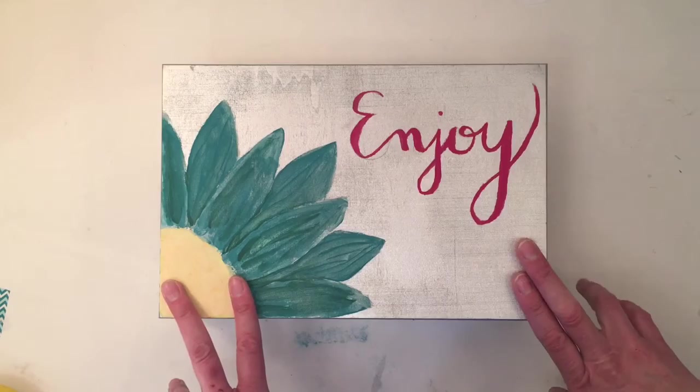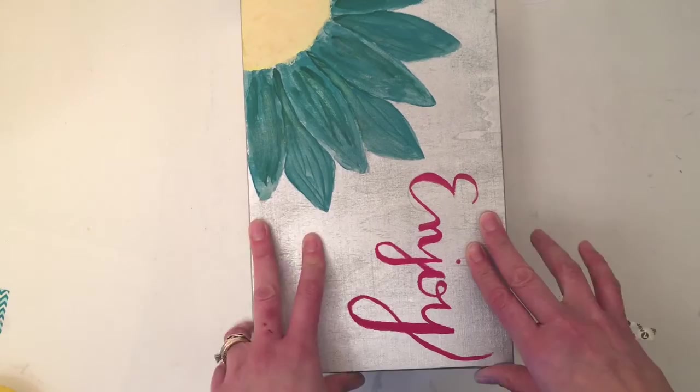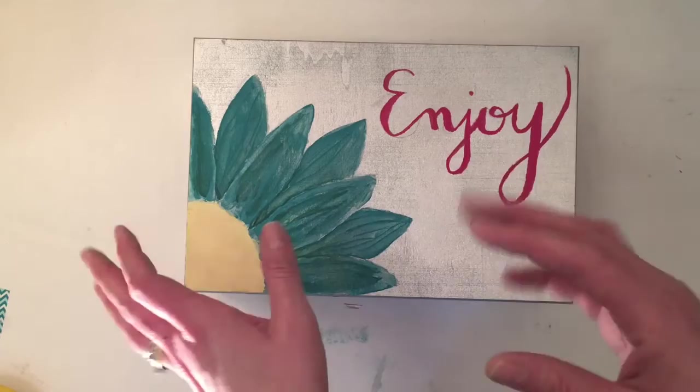First of all, you want to start out with two wooden canvases. They're wood, they're hollow on the back side. I'll show you pictures of that in just a second. What you're gonna do is use a strong tape and tape them together and create sort of a book.